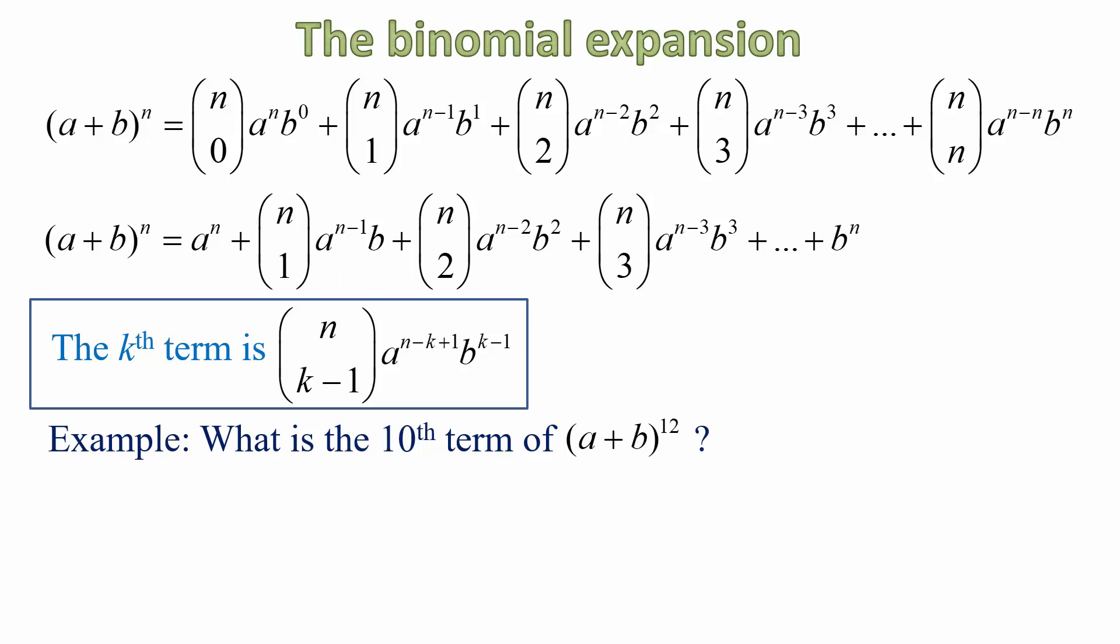Applying that to an example, let's suppose you wanted to work out the 10th term of the expansion to A plus B to the power of 12. Where would you start? Well, power of 12 of course means N has to be 12. And we want the 10th term, so K is equal to 10. We make the substitutions, and that's what it looks like before simplifying. And after simplifying, it becomes 12, 9, A to the power of 3, B to the power of 9.